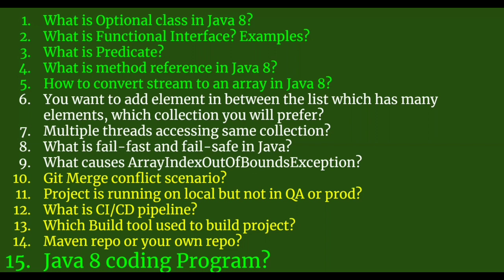Have you come across a situation where your project runs on your local system but not on QA or production? Yes, I've found this scenario frequently. The reason could be permissions, file location access, or differences in memory between local and virtual machines. To solve this problem we have Docker — code running on your local machine will always run on your virtual machine using Docker. Docker is the solution for this.